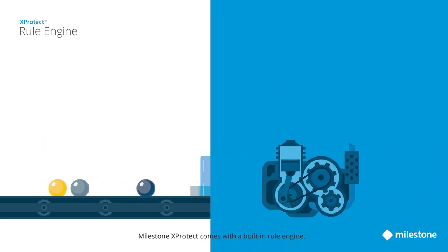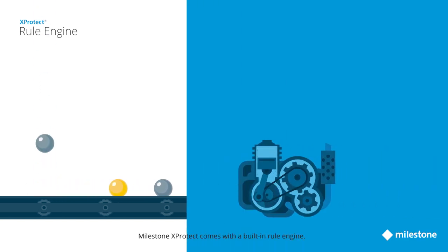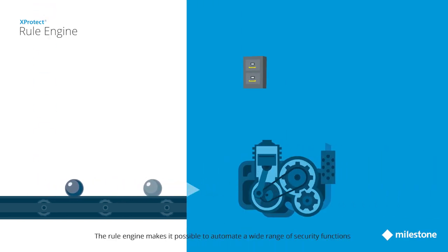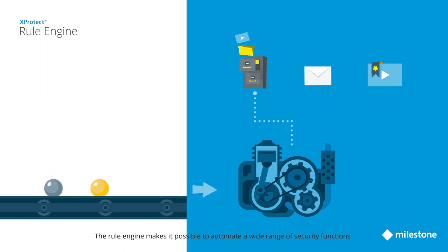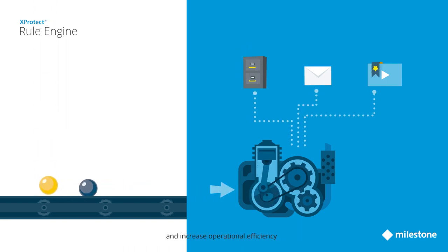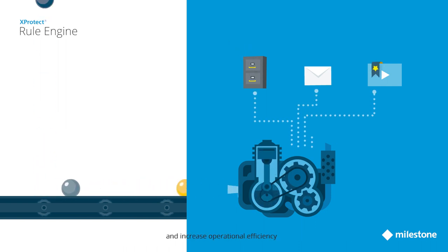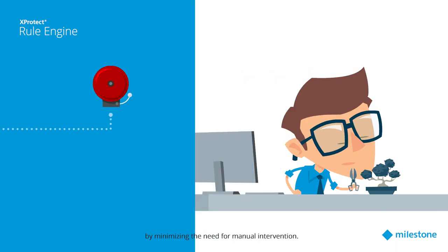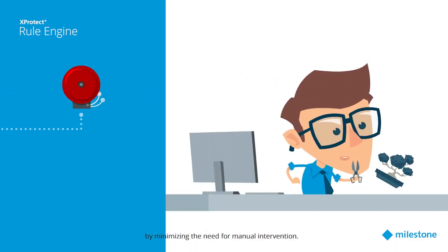Milestone XProtect comes with a built-in rule engine. The rule engine makes it possible to automate a wide range of security functions and increase operational efficiency by minimizing the need for manual intervention.